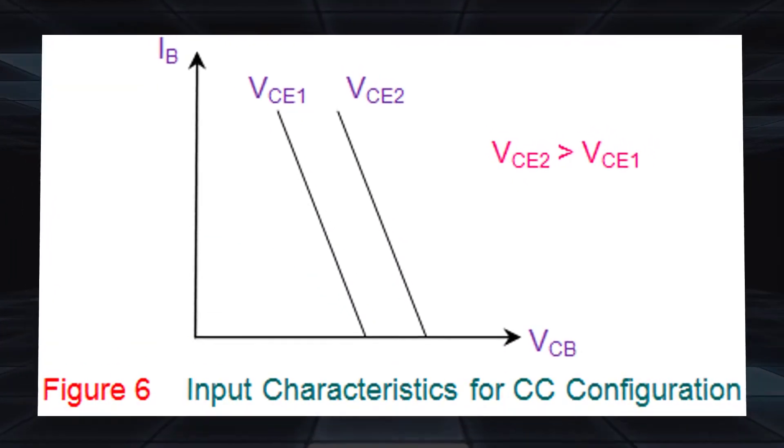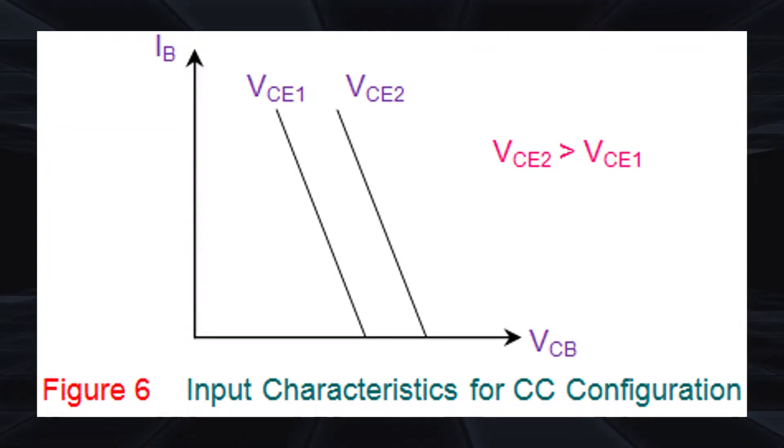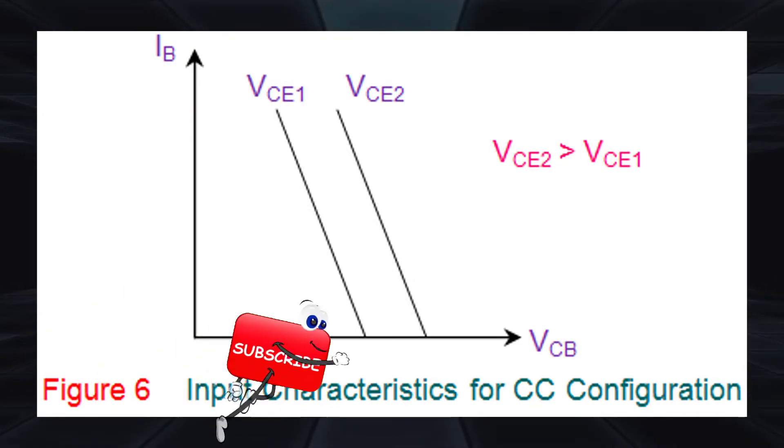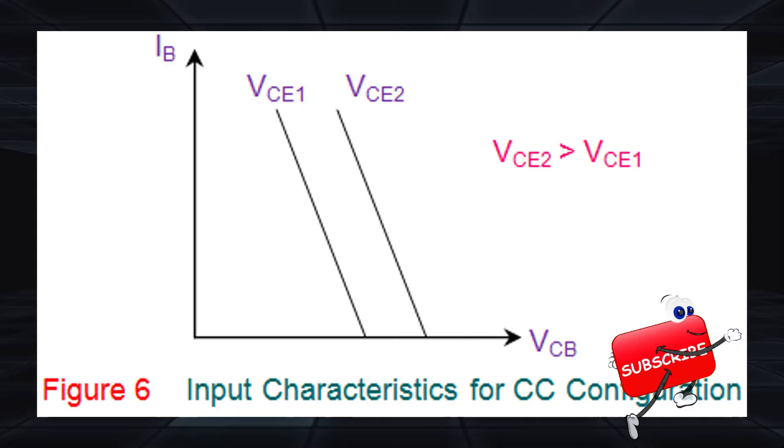The figure shows the input characteristics for CC configuration which describes the variation in IB in accordance with VCB for a constant value of collector emitter voltage VCE.